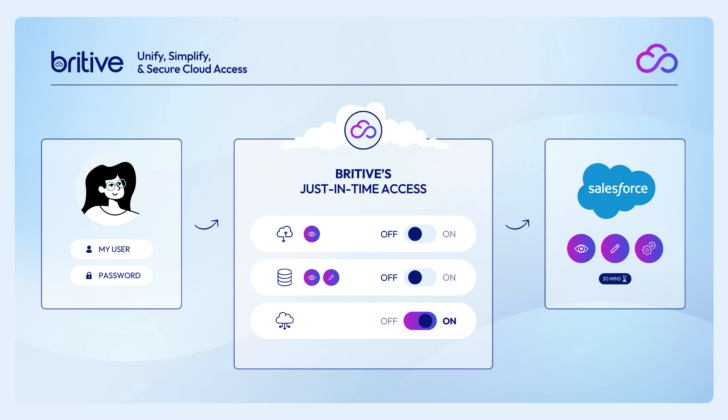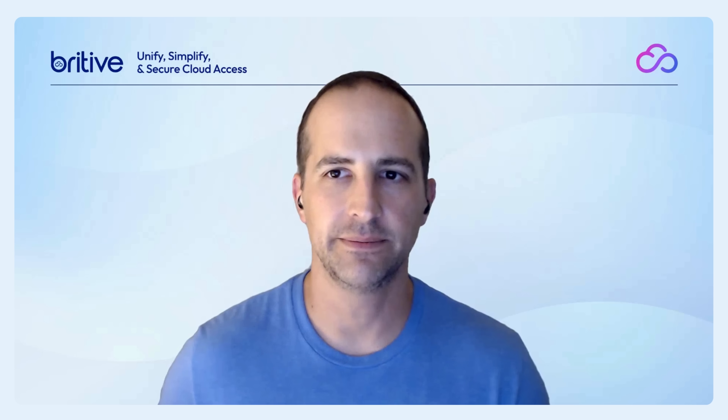The authorization — the permissions themselves — are being delivered by Britive just in time, just when you need them. Not all JIT is created equally. If you're not actually managing the permissions or authorizations on the systems themselves, then what you're delivering may not be just-in-time the way we mean it.